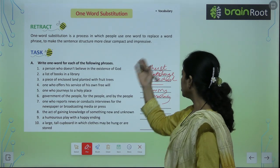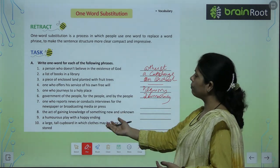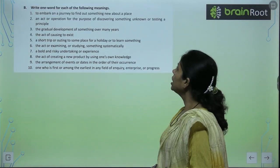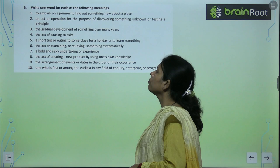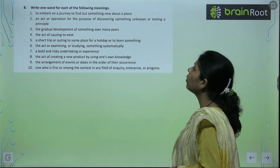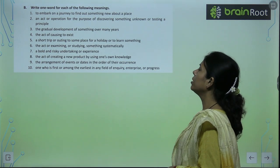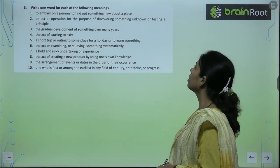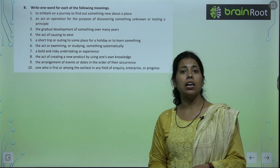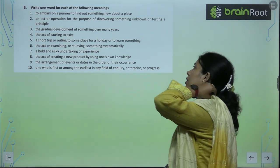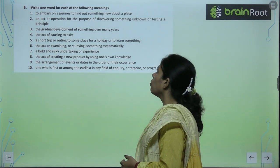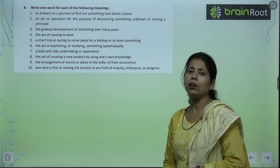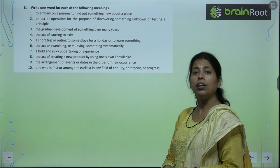तो ऐसे ही आपको यह सब solve करने हैं. Write one word for each of the following: To embark on a journey; To find out something new about a place; An act of operation for the purpose of discovering something — शायद इसका होगा experiment; The gradual development of something over many years; The act of causing something to exist. यह homework है आपके लिए — इनके लिए one word क्या होगा, write करेंगे.